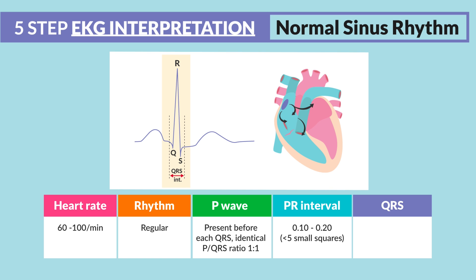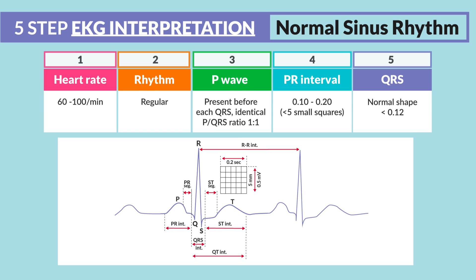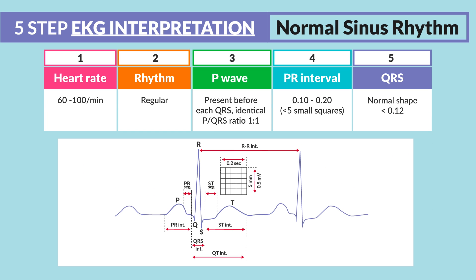Lastly, step five is the QRS — our big ventricular contraction. Is it present, is it upright, and is it tight? It should not be wide; it should only be about three little tiny boxes, or basically 0.12 of a second.